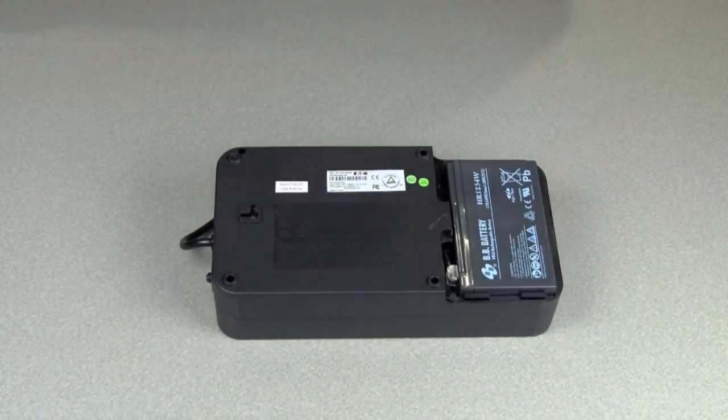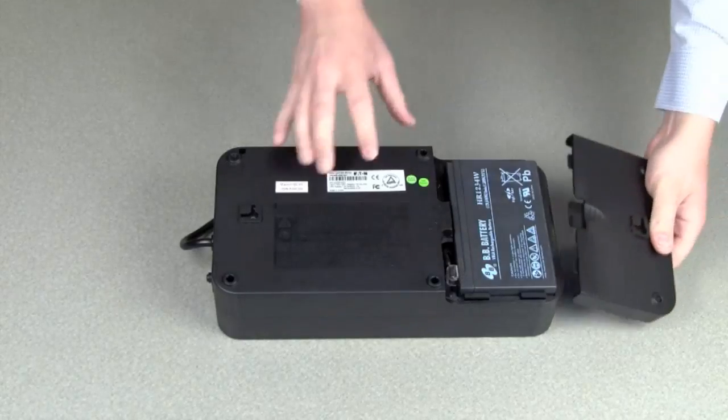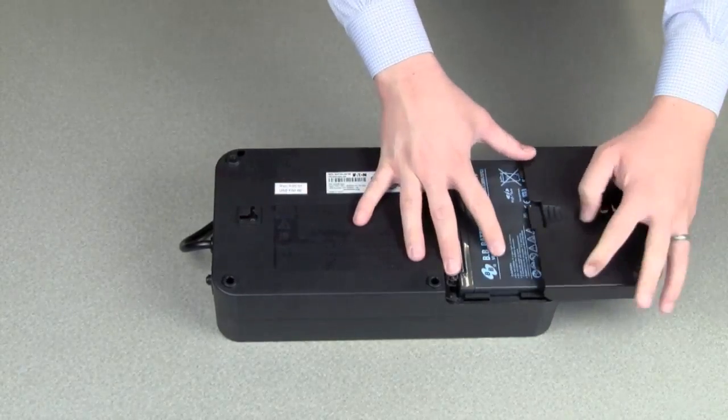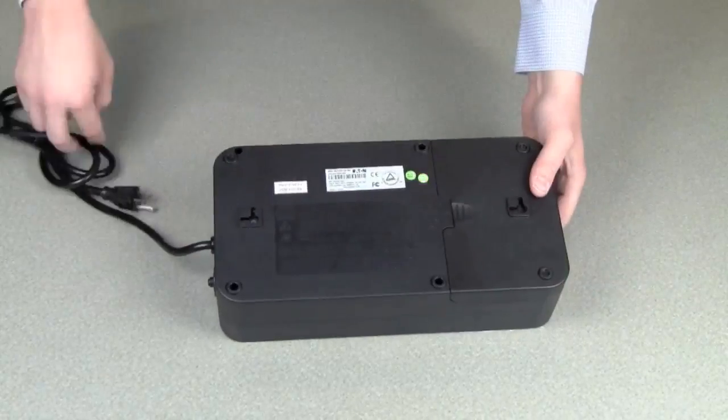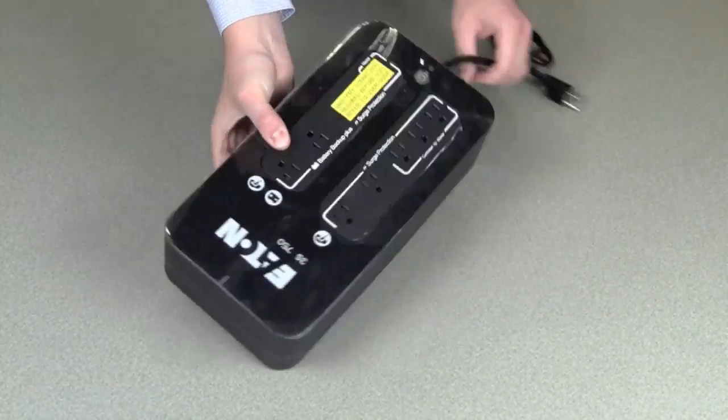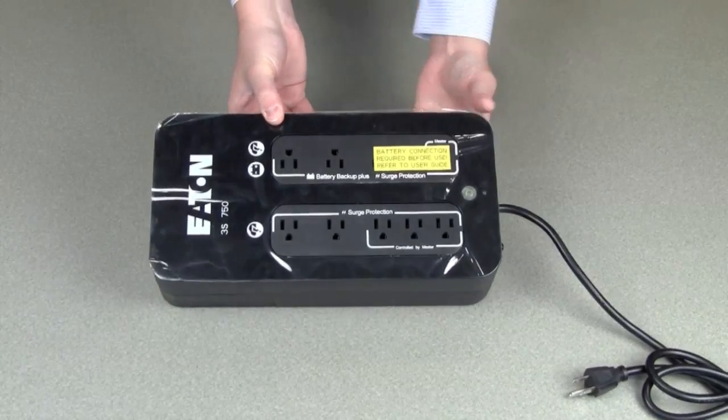So once we've completed that, we'll go ahead and cover the battery compartment with the cover and snap that back into place. Now the UPS is ready to use. We'll flip it over and remove this warning sticker now that we've made the battery connection.